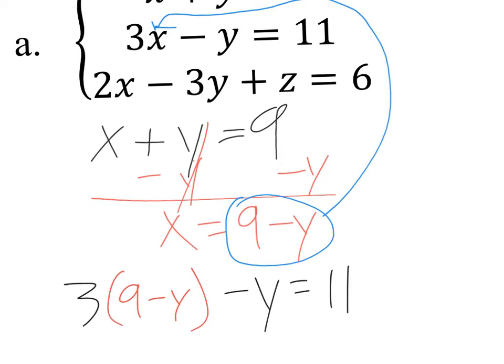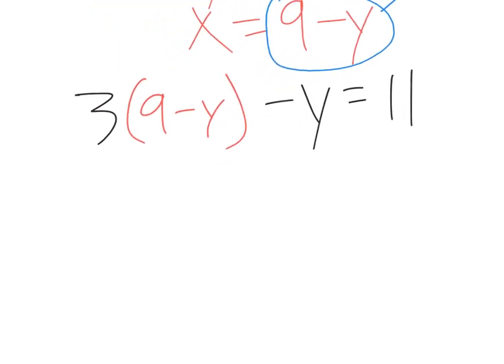See, so now I only have one letter in here, two, I have two y's. Whereas if I plugged it into the bottom one, I'd have a y in this one, a y here and a z there. So it's not really helping me because I still have two variables left. So here I only have one variable. And that's the letter y. So I'm going to distribute. So I have 27, three times nine is 27, minus three y. Bring down the rest, minus y equals 11.